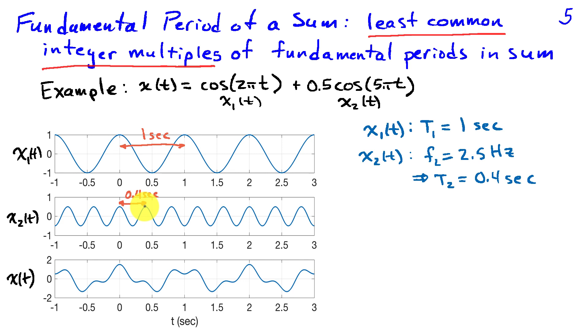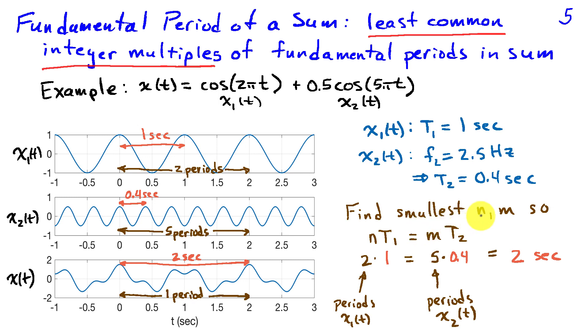To find the fundamental period of the sum we have to find a common period between x1 and x2. I do that by finding the smallest integers n and m so that n times the fundamental period of x1 or t1 is equal to m times the fundamental period of t2.